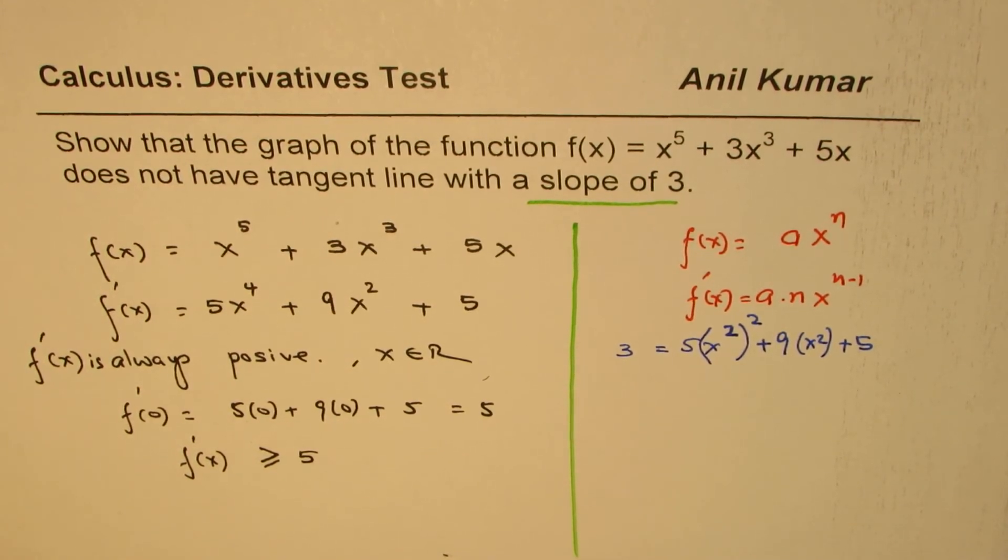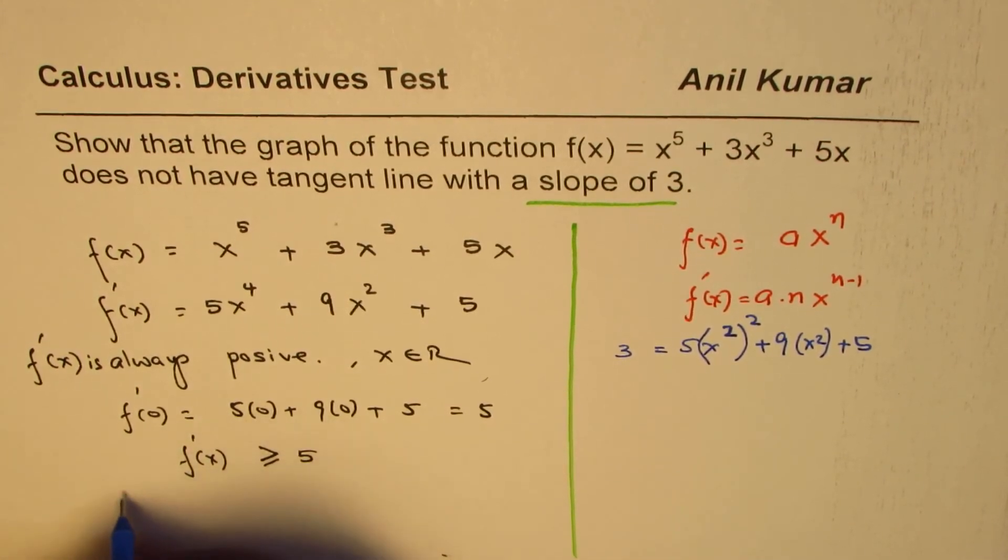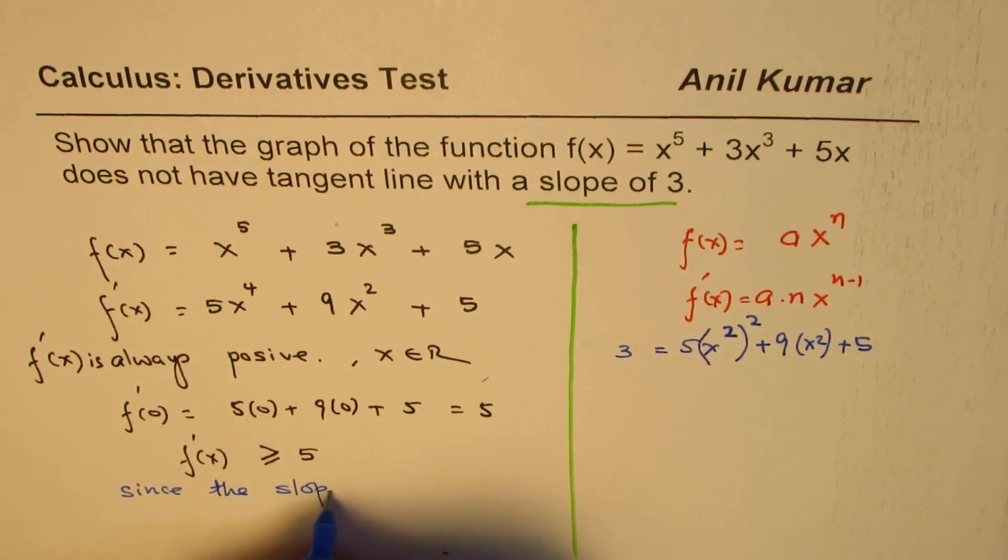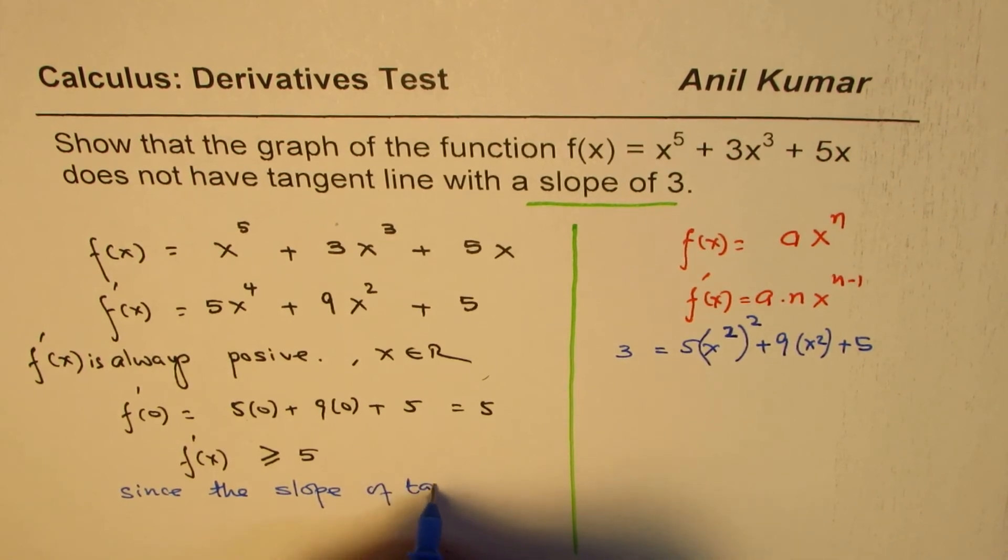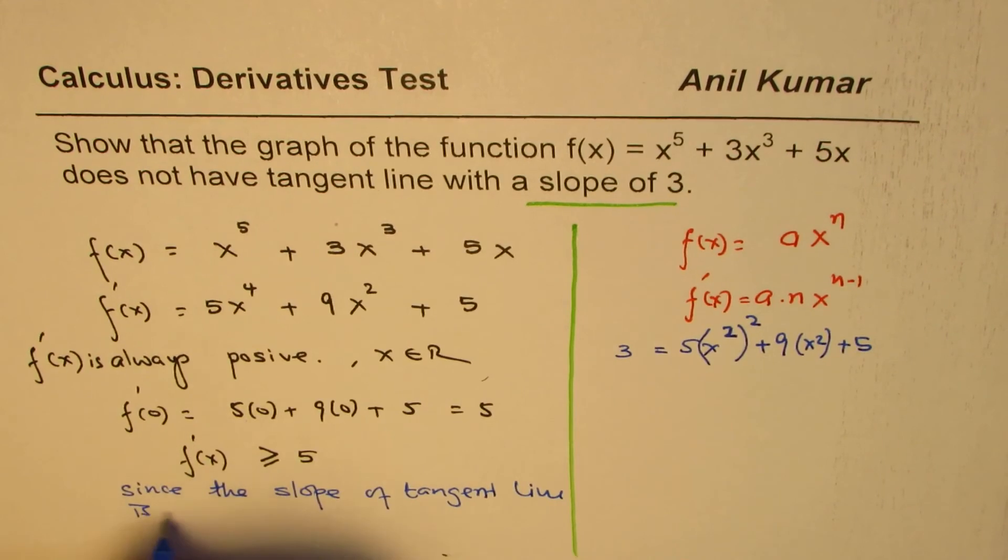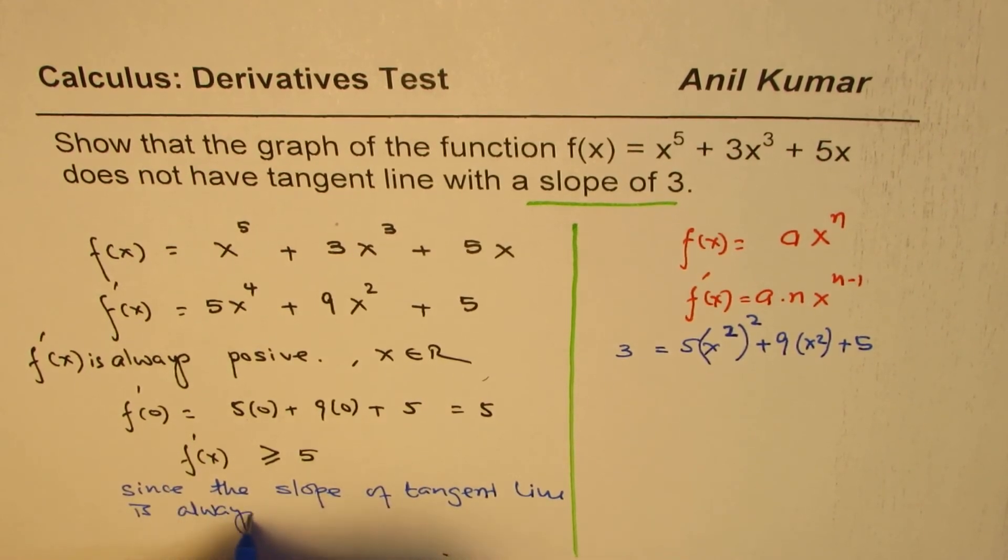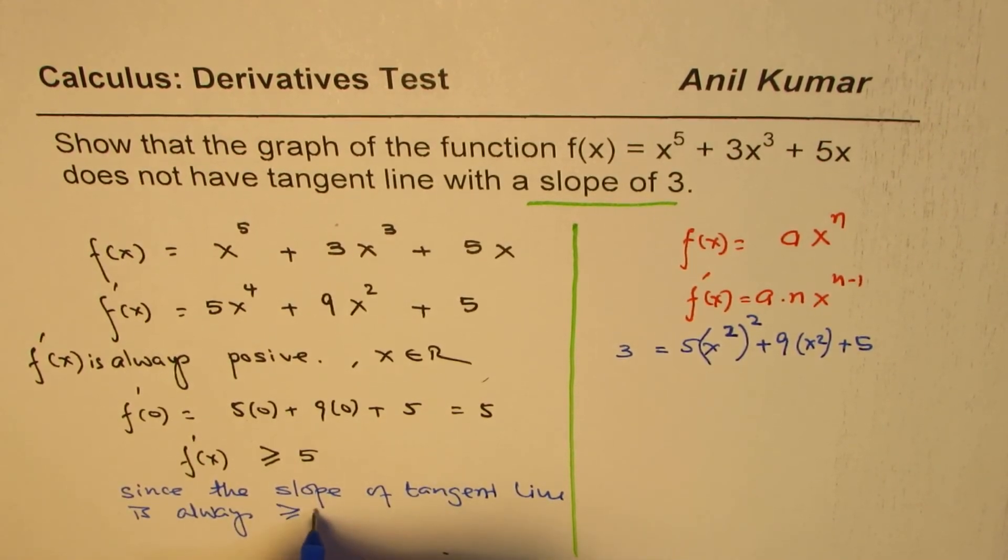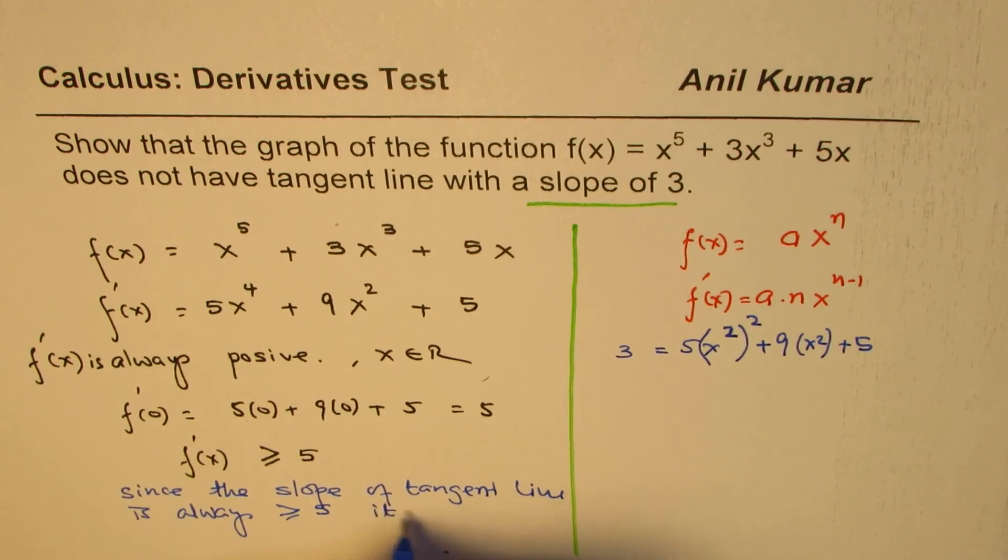So we can see: since the slope of the tangent line is always greater than or equal to 5, it cannot be 3.